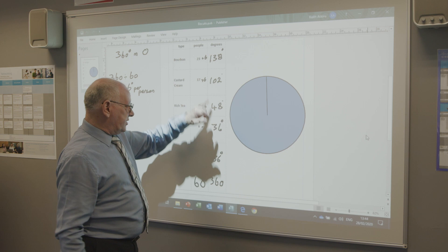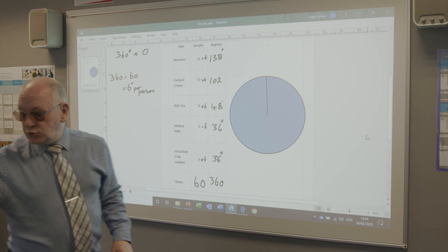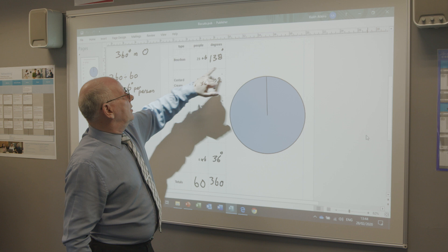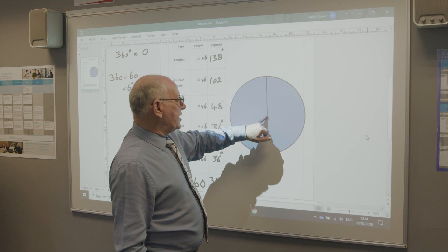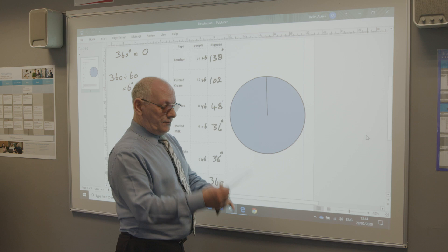So we've done the sum. All we've got to do now is draw these different sections. So this line is already put in for you. If it isn't, you put it in first. There's no measuring. It's from the centre. Straight line, straight the way up to the outside edge.